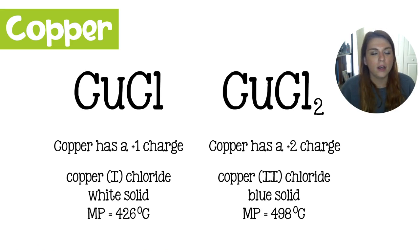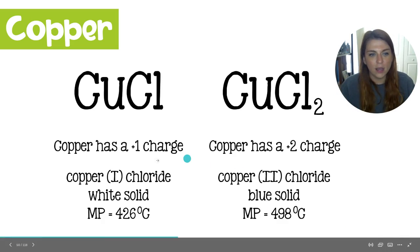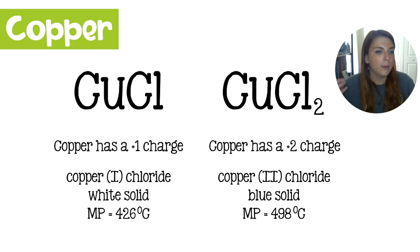There are huge differences between copper with a plus one charge and copper with a plus two charge. So you can see on the left side, we have copper with a plus one charge. Both of our ones were crisscrossed because chlorine is always a minus one. And we get copper (I) chloride. This Roman numeral here indicates the charge on the copper. So this copper one is telling you that copper has one valence electron and it's giving just one valence electron to the chlorine. This is going to be a white solid. So visually it looks different. And this melting point is 426 degrees Celsius.